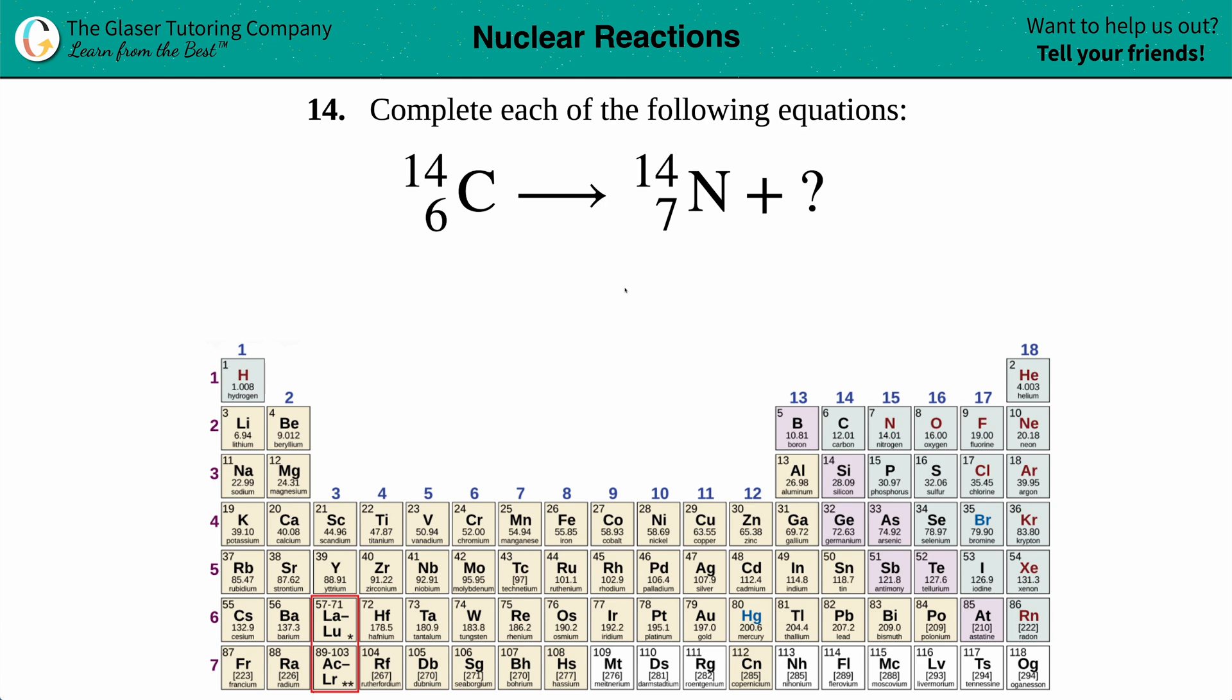Number 14, complete each of the following equations. We have this nuclear reaction where we have carbon C, atomic mass of 14 with an atomic number of 6, and this is yielding into a nitrogen atom plus something else. So we first have to find out what this is. Let's get rid of the question mark and put in our three boxes.